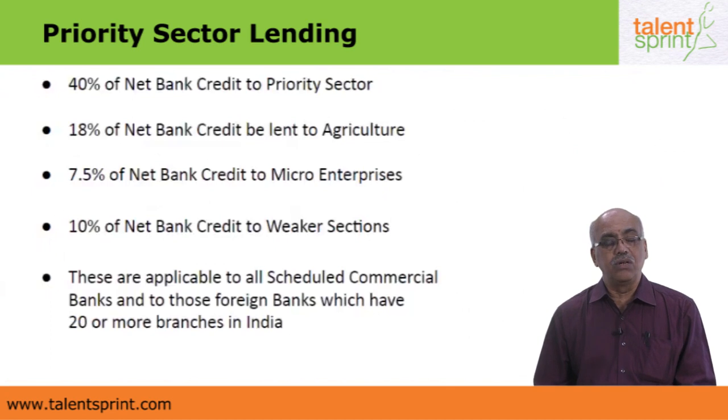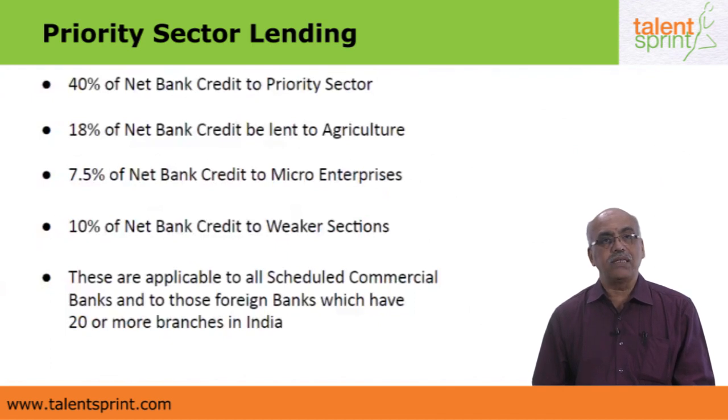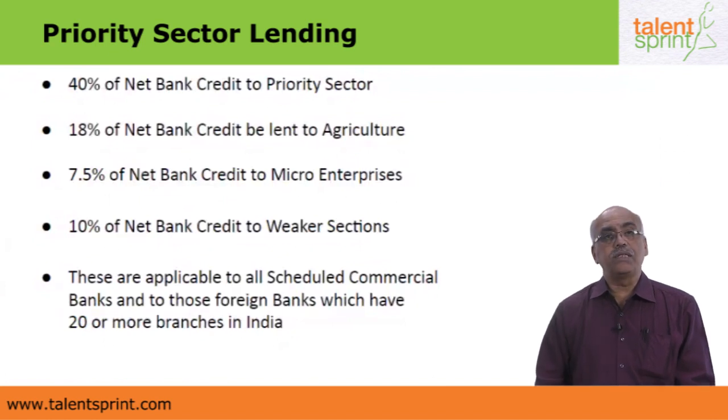These priority sector targets are applicable to all scheduled commercial banks and to foreign banks having more than 20 branches in India. For foreign banks with fewer than 20 branches, these priority sector lending targets had to be achieved before the end of fiscal year 2018. These are the qualitative methods by which the Reserve Bank of India ensures that monetary policy is framed, implemented and regulated. This completes the second part of the monetary policy video — see you again with a different topic in the next video. Thanks for watching and bye.